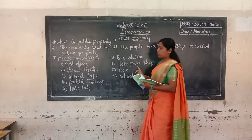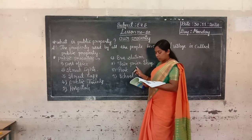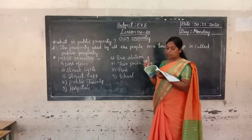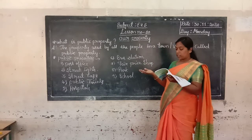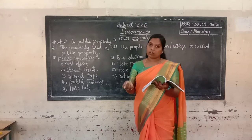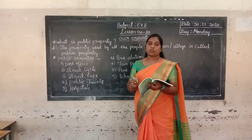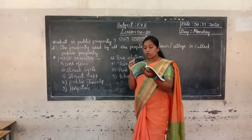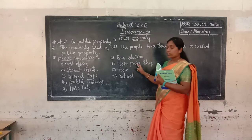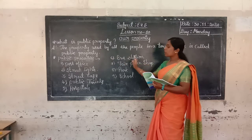Next we go to fair price shop. A fair price shop of a town or village is where we get rice, wheat, sugar, and oil available at low cost. We get a low price in this shop. It is also very useful and is one of the public properties.